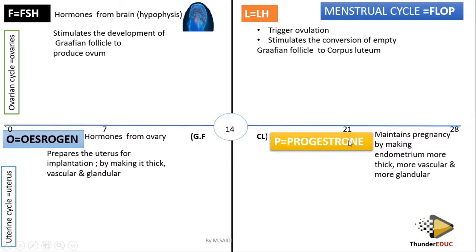Progesterone is very important in maintaining pregnancy. How? By making the endometrium wall more thicker, more vesicular, and more granular. Notice the word 'more' — the wall is already thick from estrogen, but progesterone makes it even thicker. It's already vesicular, but progesterone makes it more vesicular. Already granular, and progesterone makes it more granular — essentially nurturing and maintaining the endometrium.